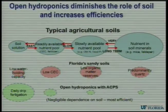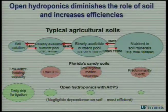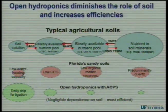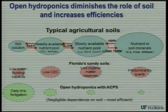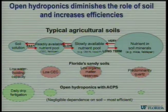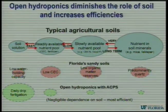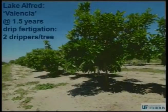Open hydroponics, or optimal fertigation, diminishes the role of the soil and increases efficiencies of uptake of nutrients and water. What I want to show here is that open hydroponics and optimal fertigation greatly increases the daily drip fertigation portion — you're bypassing a lot of the functions of the soil, so they become negligible. It's the most efficient way to do it, but it has to be spoon-fed.